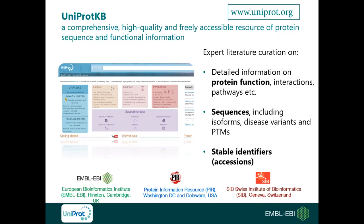By expert literature curation, we provide detailed information on protein molecular function, protein-protein interactions, signaling pathways, subcellular locations, tissue-specific expression, and more. We provide protein sequences including isoforms, disease variants, and post-translational modifications. Importantly, we also provide stable identifiers — the UniProt accession numbers — that allow specific identification of a protein and should be used when citing a UniProt entry. UniProt is updated every eight weeks and can be freely accessed and downloaded at uniprot.org.